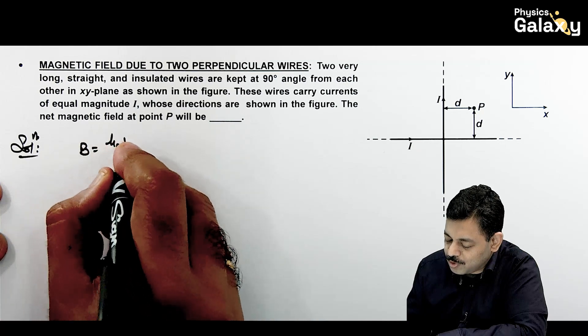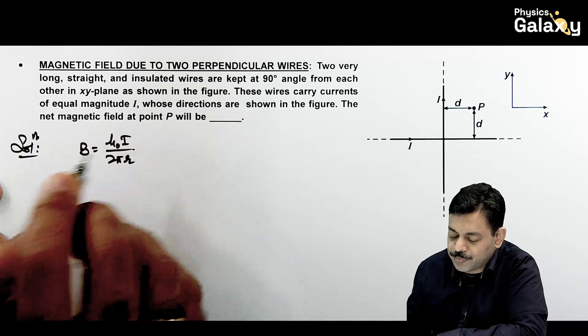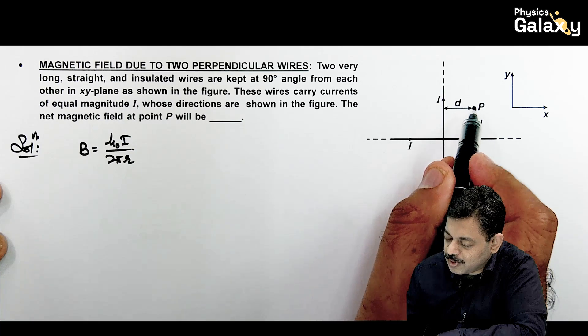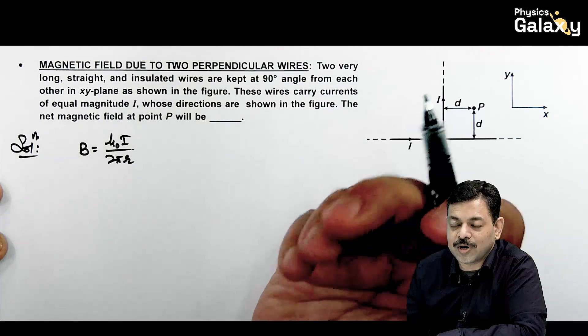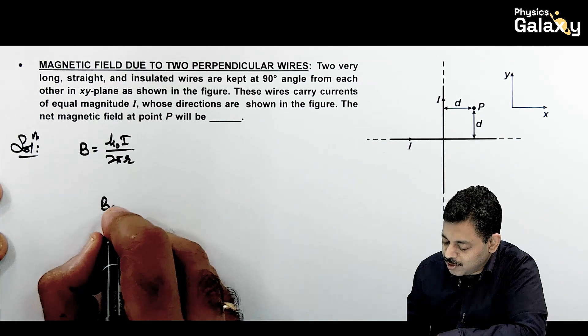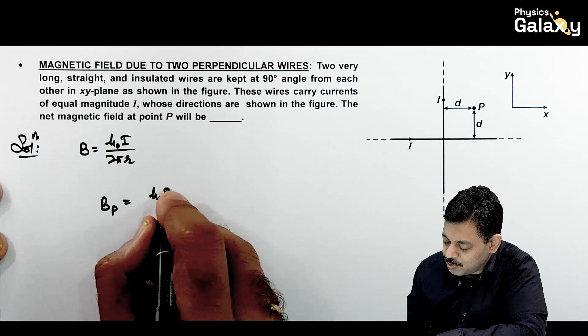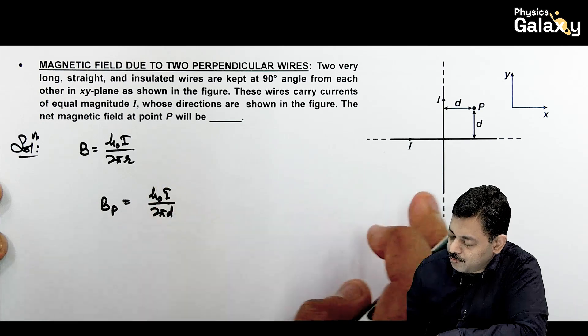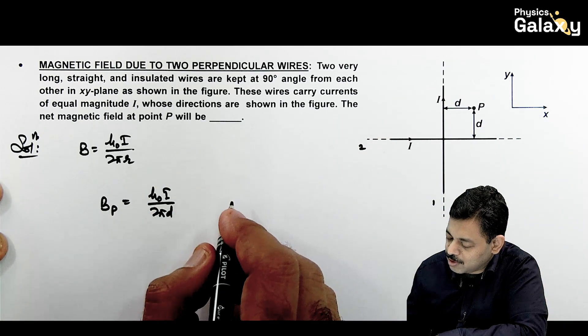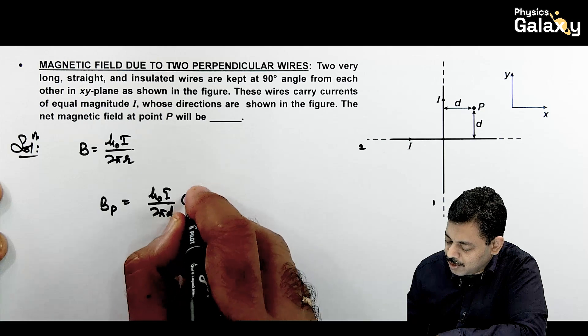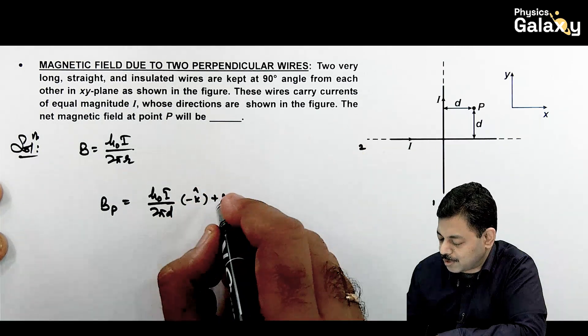The magnetic field due to a straight wire is given as mu naught i by 2 pi r. In this case, the first wire at distance d from point P will produce field in downward direction. The second wire will produce field in upward direction by right hand thumb rule. For the first wire, magnetic field is mu naught i by 2 pi d in inward direction, so minus k cap. For the second wire it's in outward direction, so plus k cap.